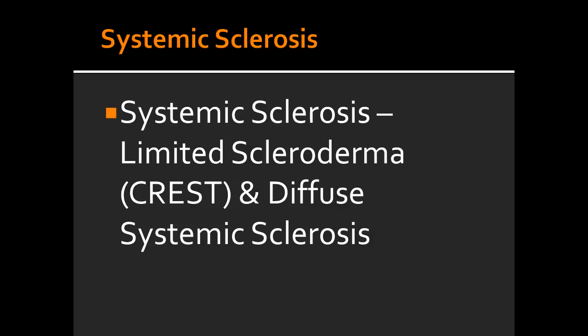What are some of the features of Diffuse Systemic Sclerosis? Some of the features of Diffuse Systemic Sclerosis include widespread scleroderma, which has a rapid progression and early visceral involvement.